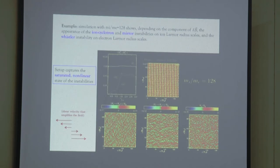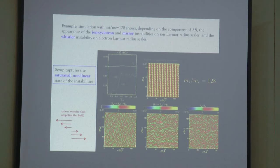This is an example of one of our simulations. This panel shows the density of the plasma, and the yellow line corresponds to the direction of the magnetic field. As we impose the shear, we make this magnetic field grow, and as a consequence we excite different types of instabilities that manifest in three panels corresponding to different components of the magnetic field fluctuations.